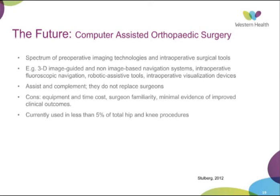Briefly on the future: computer-assisted orthopaedic surgery, which we're starting to use more at Western Health — things such as navigation tools, the Stryker Triathlon system, and using CT and MRI for preoperative planning for total hip and knee replacements. This covers a wide spectrum including 3D guided image navigation systems, intraoperative fluoroscopic navigation, and robotic-assisted tools. However, these are only a surgical complement — they don't replace the surgeon and are surgeon-dependent. The cons are cost of equipment, surgeon familiarity, and so far limited evidence of improved clinical outcomes. Currently used in about 5% of total hip and knee procedures worldwide.